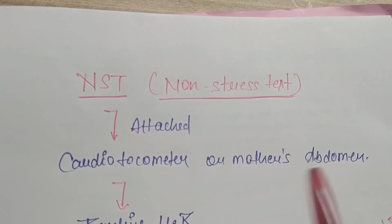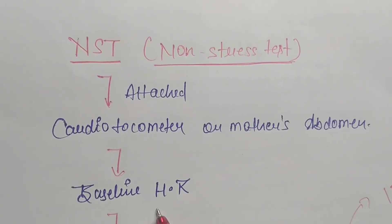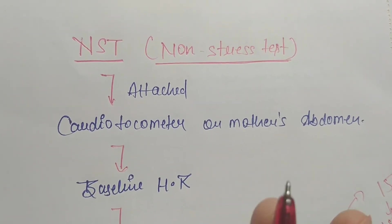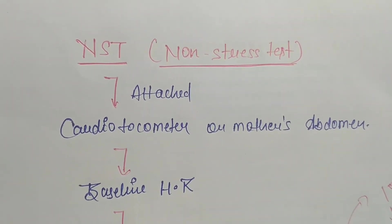After attaching the cardiotocometer, we have to look at baseline heart rate. That is a very important part. What is the baseline heart rate? The baseline heart rate means what is normally a child's heart rate.